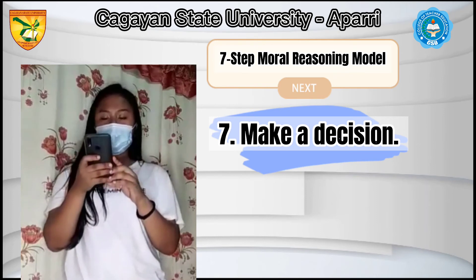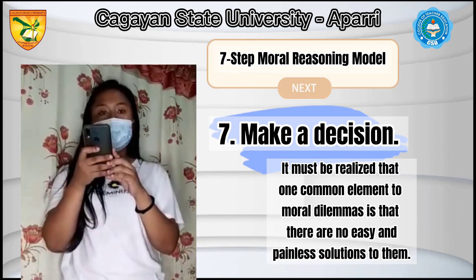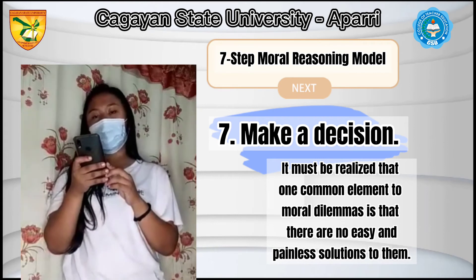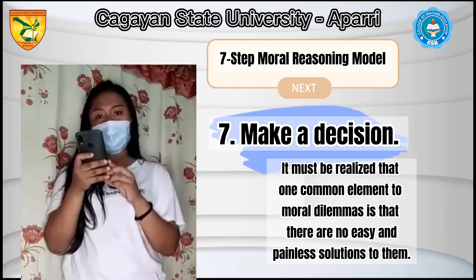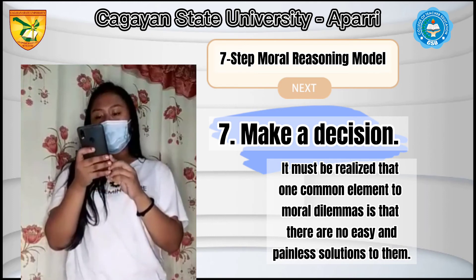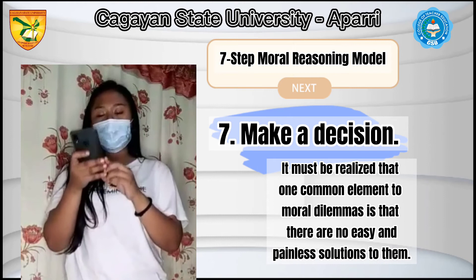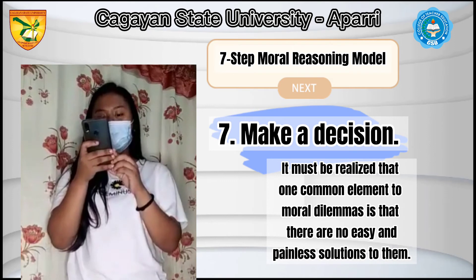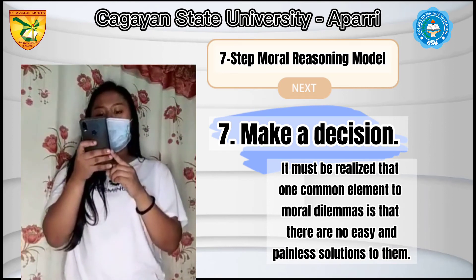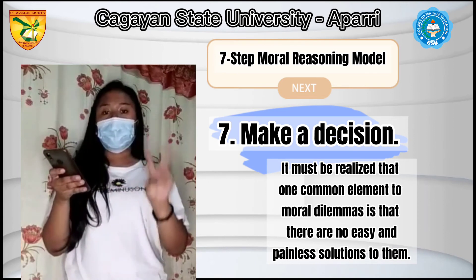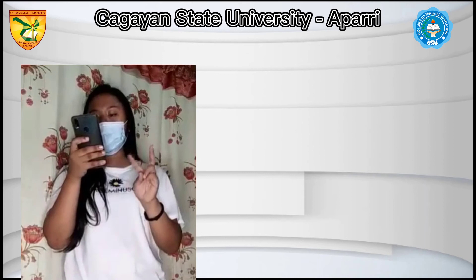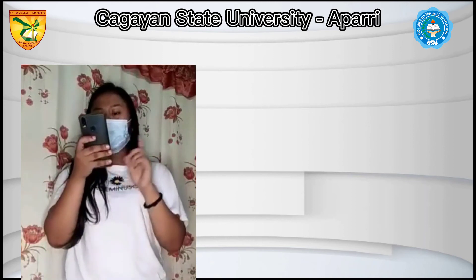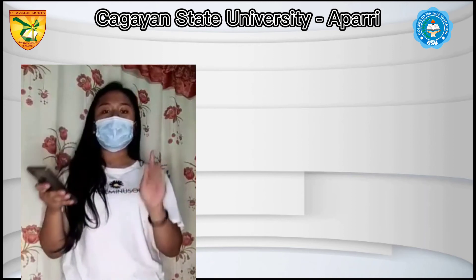Number seven, make a decision. Since deliberation ought not to go on forever, a decision must be made at some point. It must be realized that one common element to moral dilemmas is that there are no easy and painless solutions to them. Normally, the decision that is made is one that possesses the least number of problems or negative consequences, not one that is devoid of them. For example, after all, let them decide — let the two involved decide how they can settle the conflict to reach a win-win situation. In making a decision, we must consider all aspects before deciding.